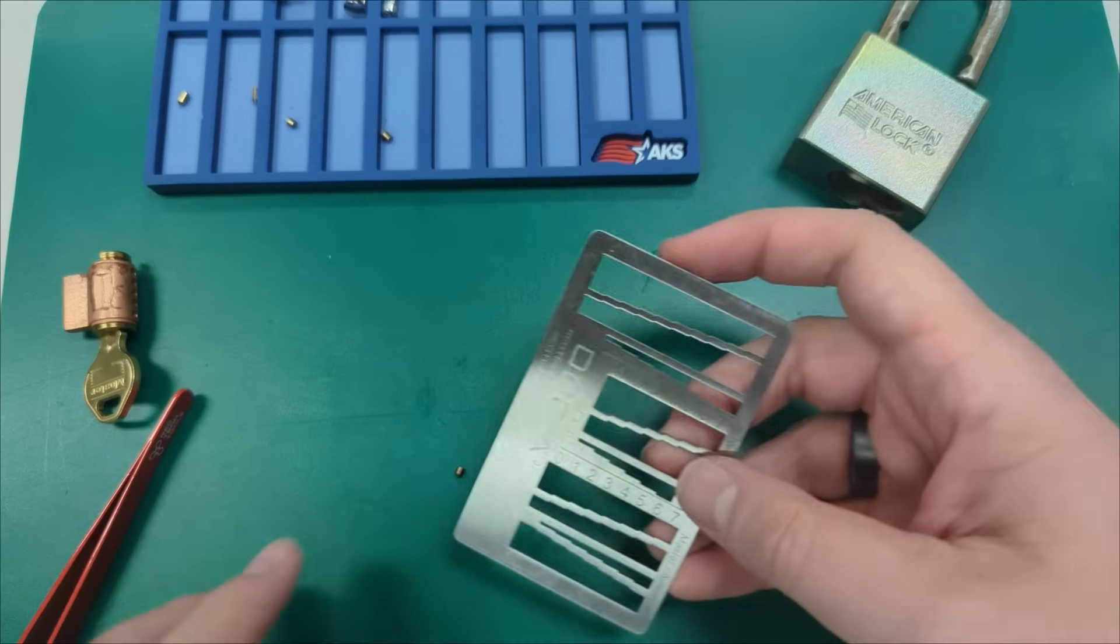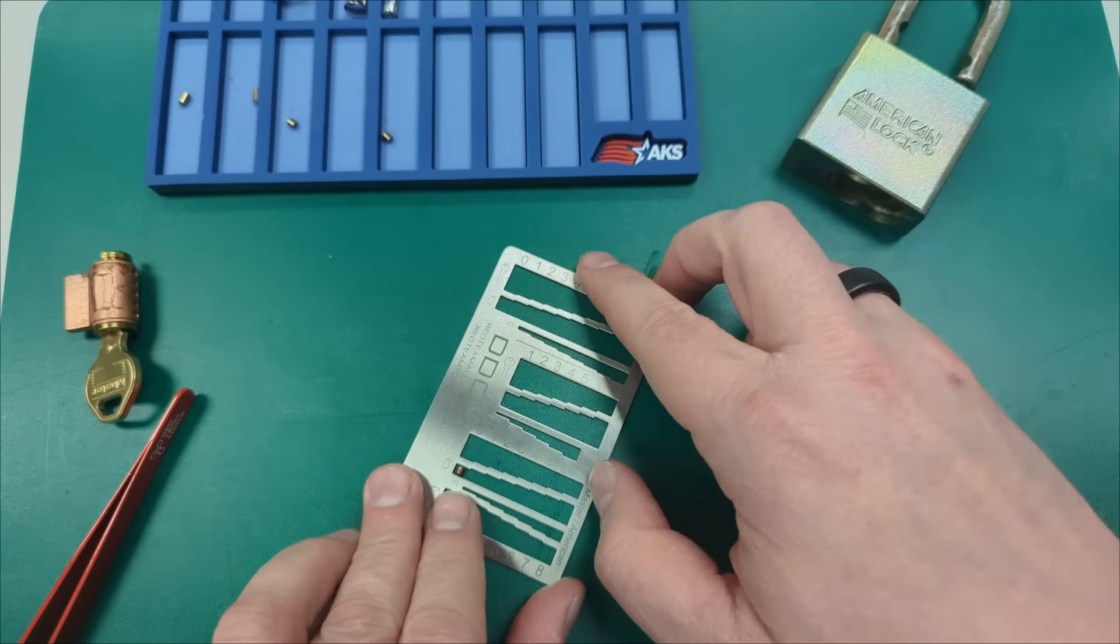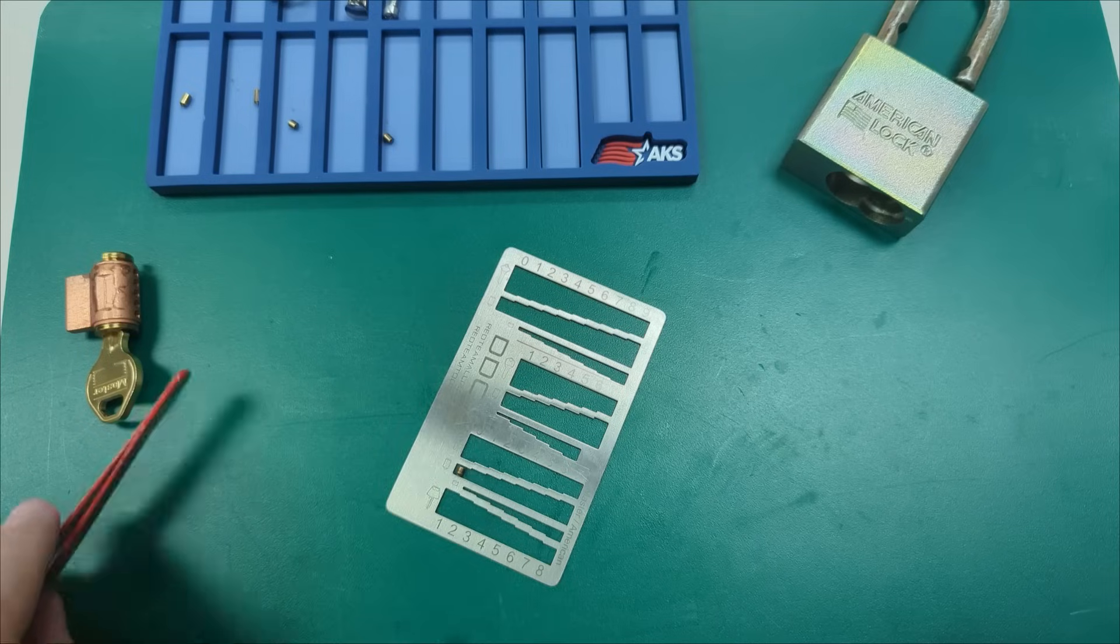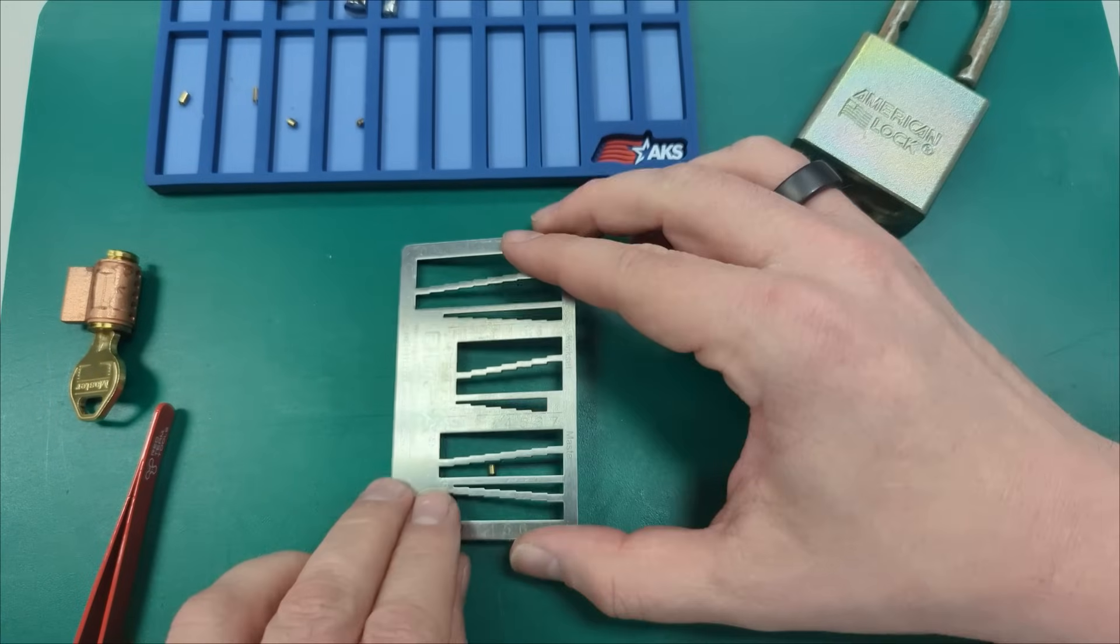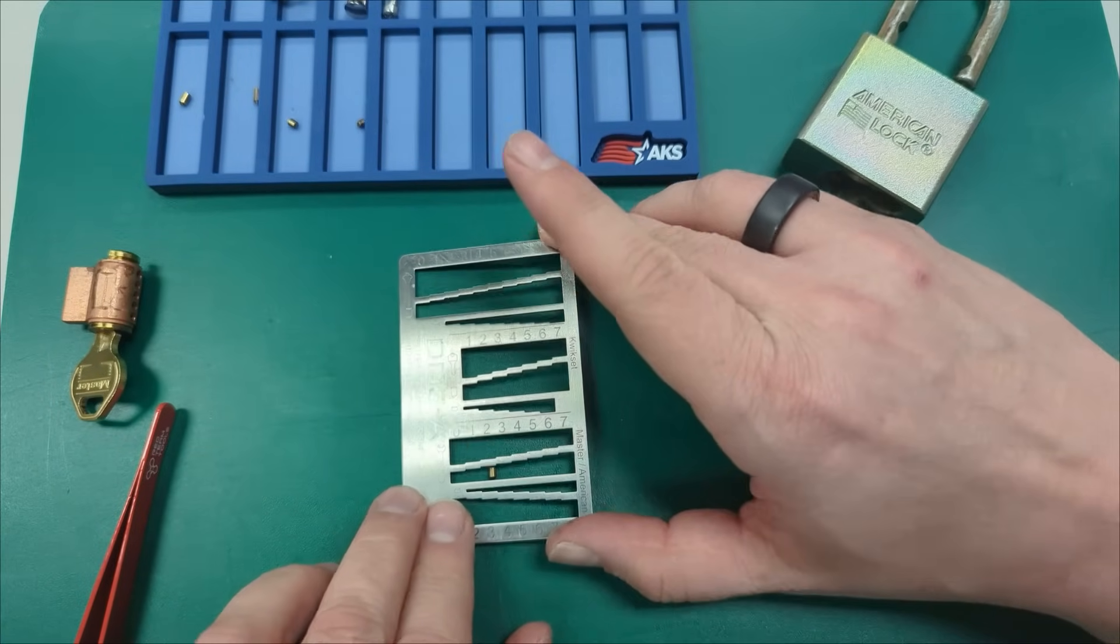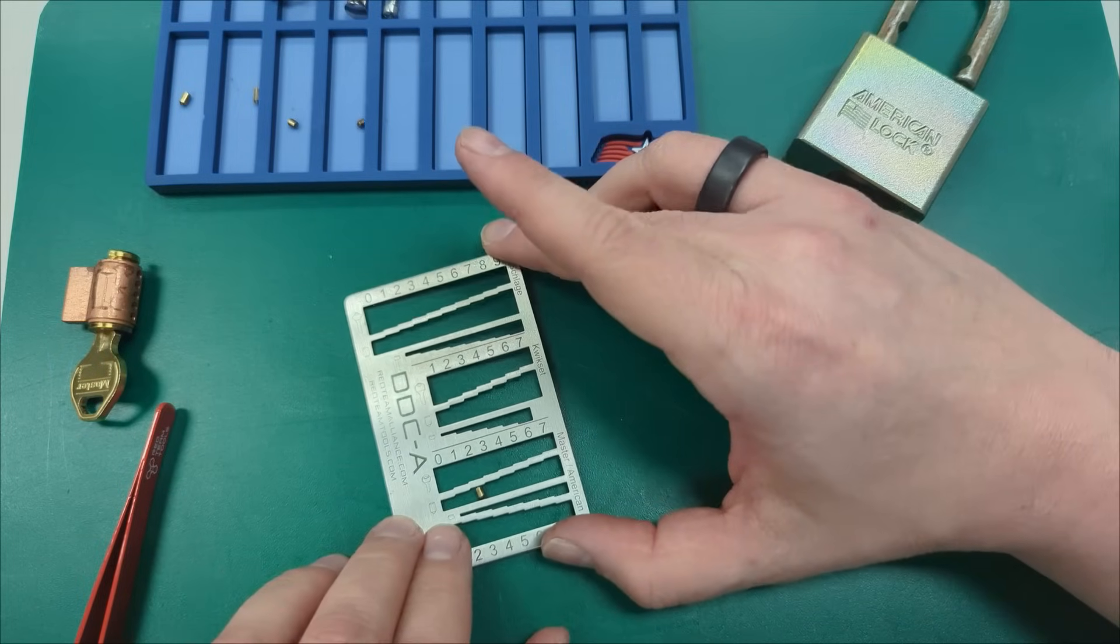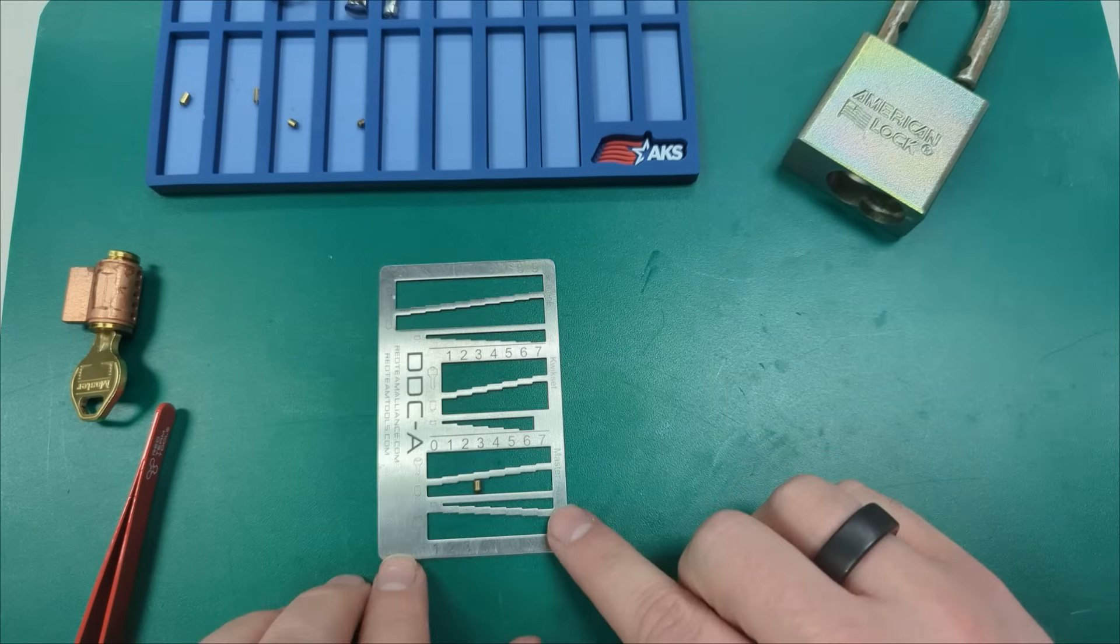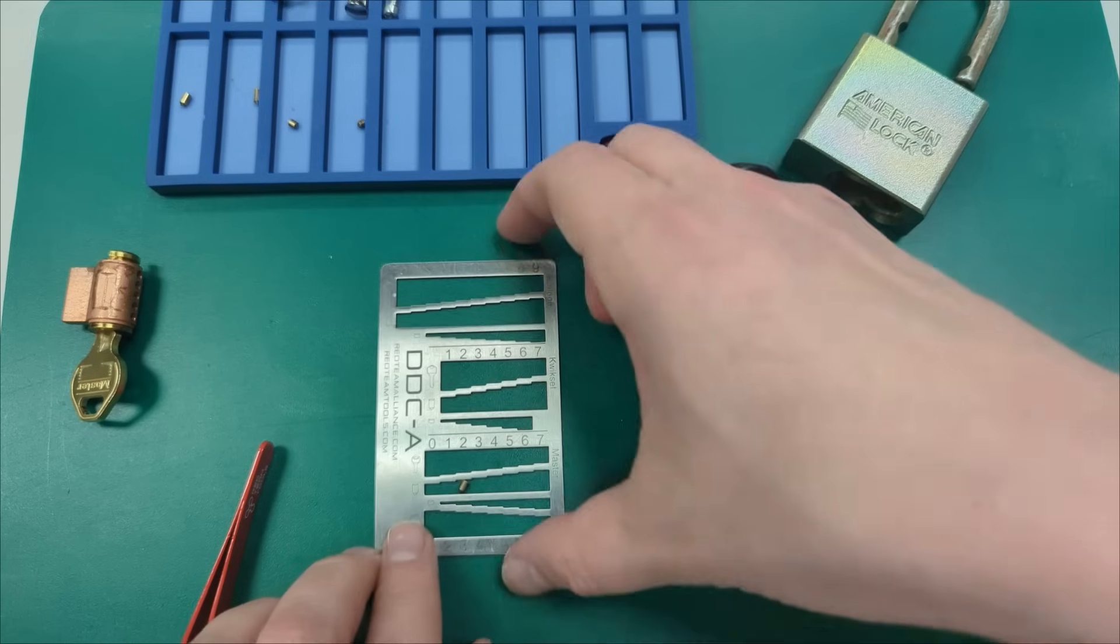But this itsy bitsy spider, could that actually be a zero? Yeah, look at that. We've got a zero cut, very high lift. And then this last one. Could it be, it might be a two. No, it's not a one. It drops through on the two. All right, so that's a Masterlock two, American lock three.